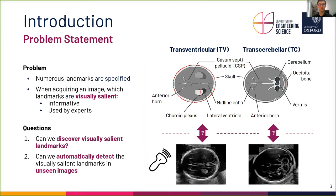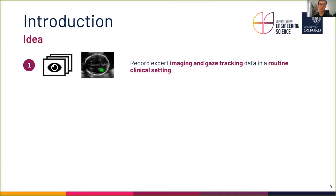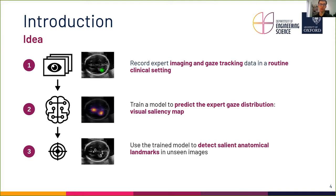Now, how do we address these questions? Our approach consists of three steps. First, record imaging data alongside real-time expert gaze tracking data in a routine clinical setting. Second, train a model such that it learns to predict the expert gaze distribution, which we will refer to as visual saliency map — in other words, train the model to predict for each point of the image how likely it is that the expert will look at it. Third, use the trained model to detect salient anatomical landmarks in unseen images.